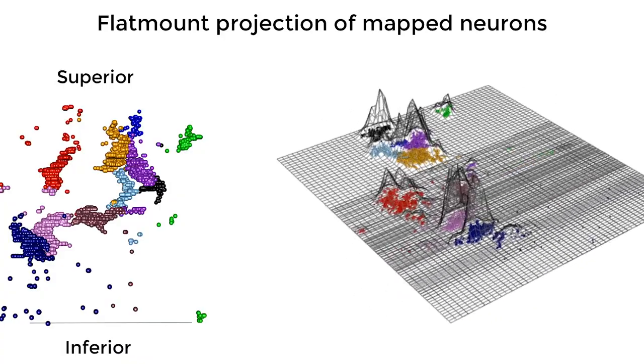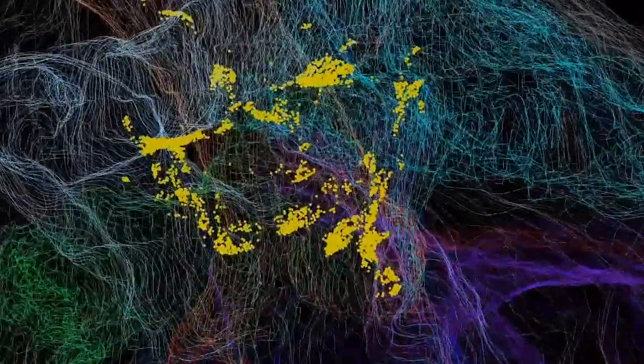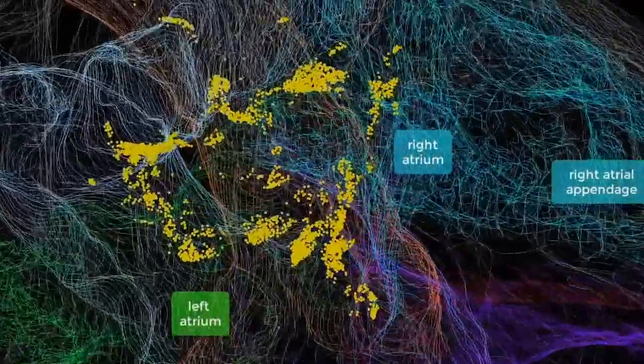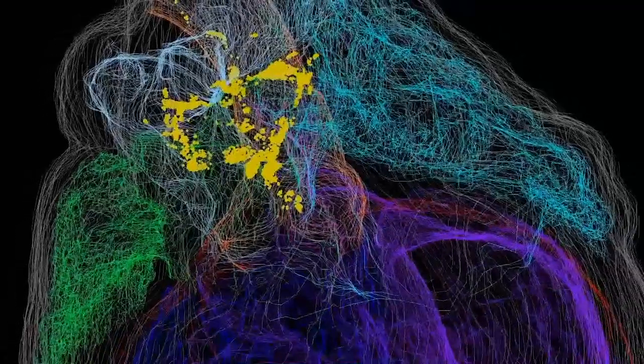The 3D image revealed that neurons that make up the ICN are found in a cluster on the top of the heart, where the heart's veins and arteries enter and leave. But the neurons also extend down the length of the left atrium on the back of the heart.